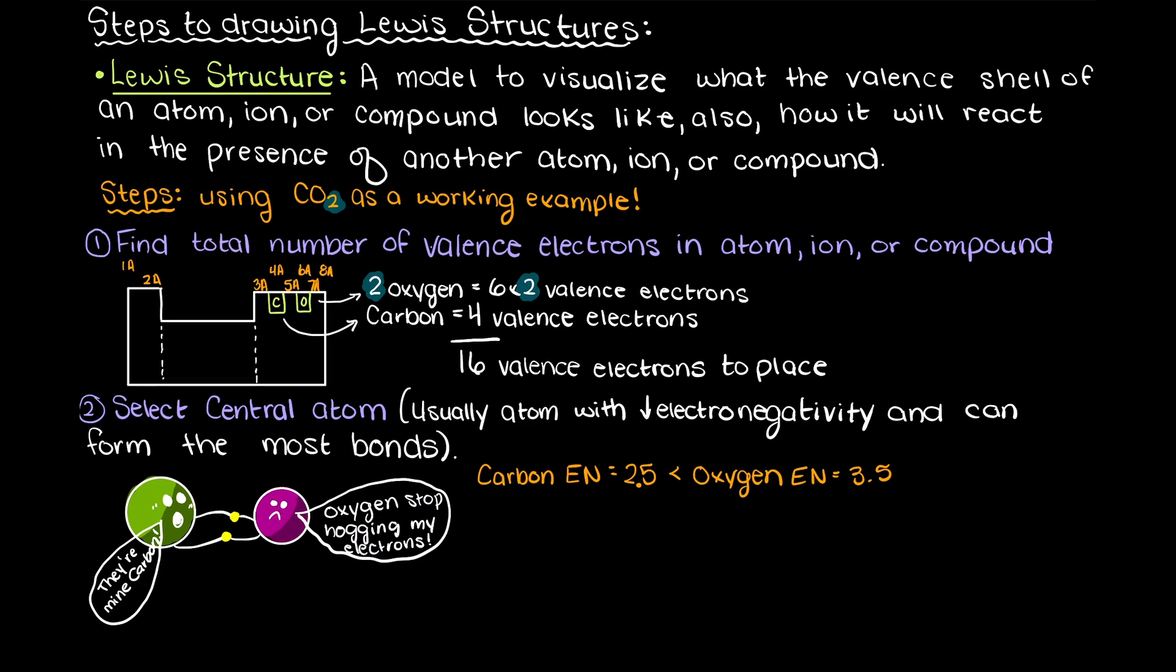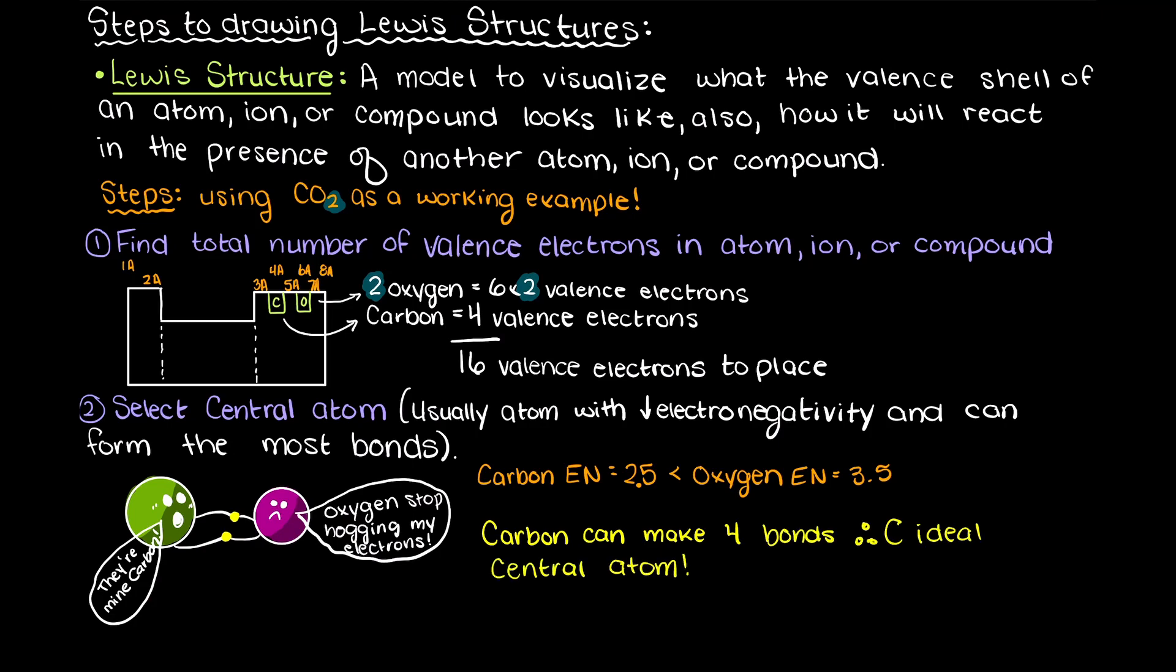Additionally, since carbon can form 4 bonds, 4 unpaired valence electrons, and both of our oxygens can only form 2 bonds each, 2 unpaired valence electrons each, this just further confirms our theory that carbon will be our central atom. So, let's place carbon in the middle here and our oxygens on either side, and as you can see I am drawing the Lewis structure of each of these atoms now.